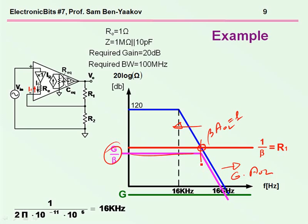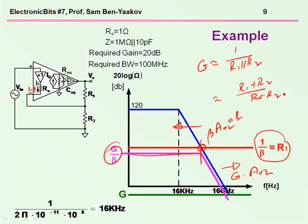Now, in the case of the current feedback amplifier, we have a very interesting situation. 1 over beta is determined by R1. G in this case is approximately 1 over R1 in parallel to R2, which is R1 plus R2 divided by R1 times R2. Now, as we remember, the gain in this region is G over beta, and lo and behold,